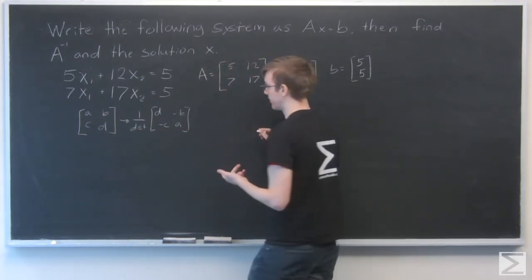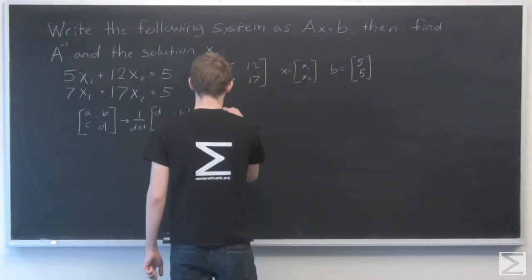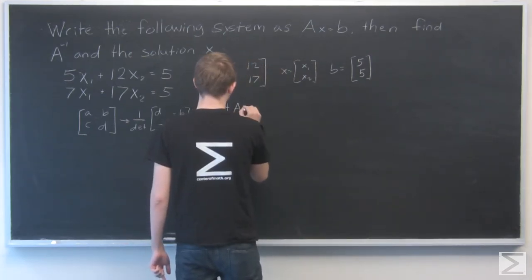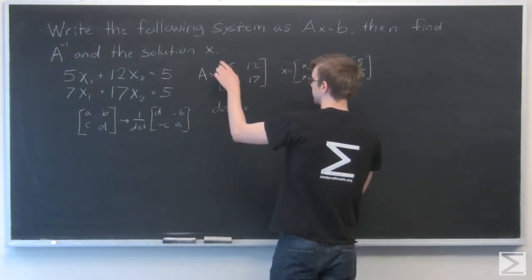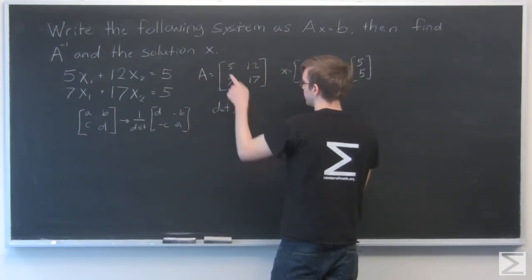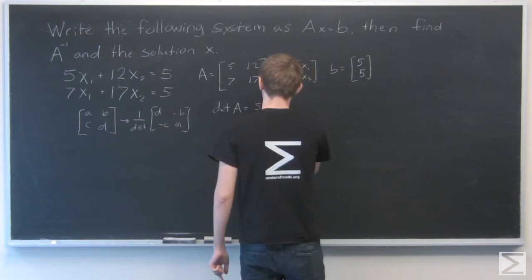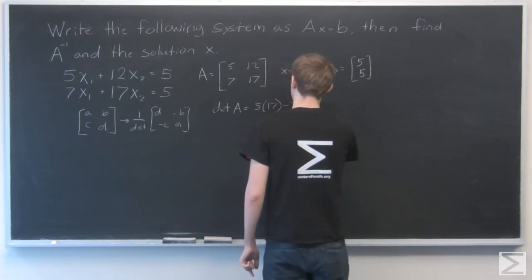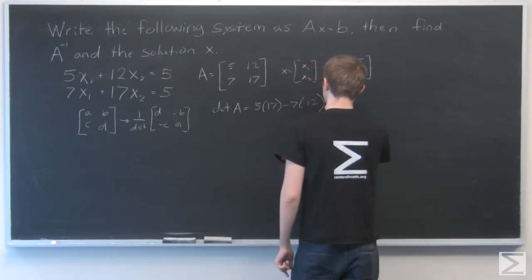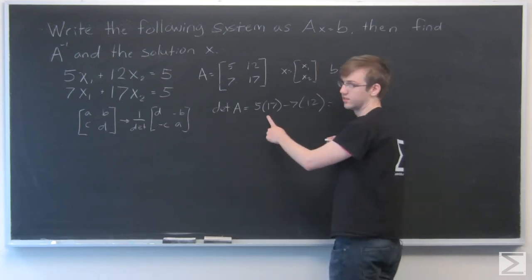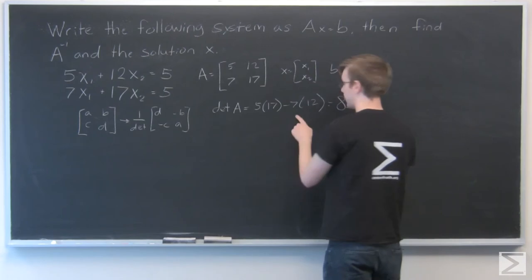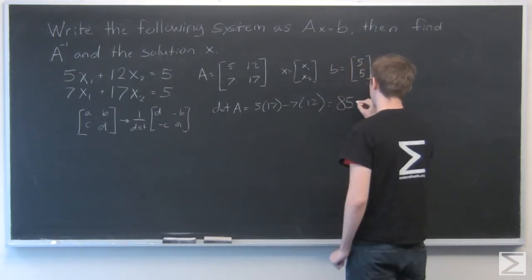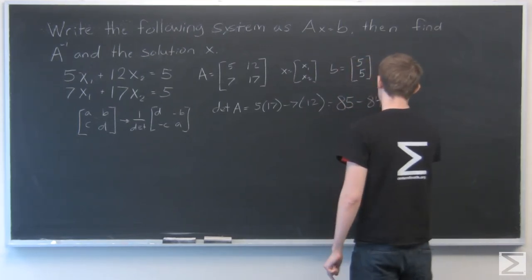So first let's find the determinant of A. The determinant is, we multiply across the diagonals. So 5 times 17 minus 7 times 12. 5 times 17 is 85, and 7 times 12 is 84. So the determinant is 1.